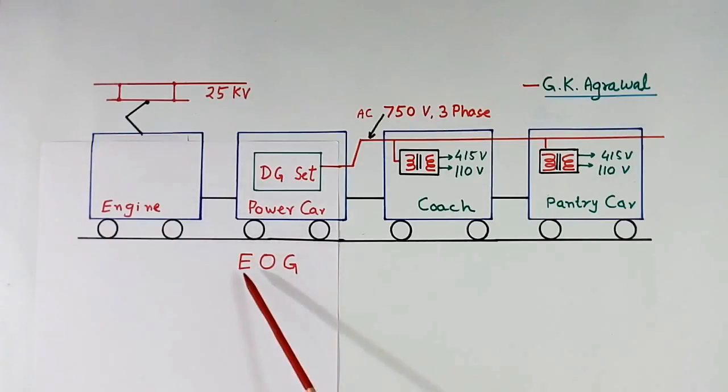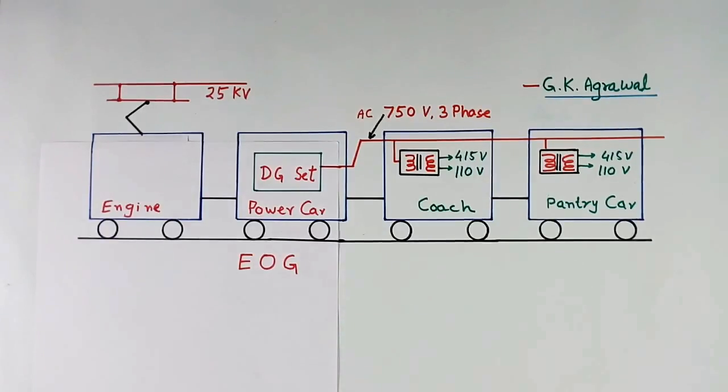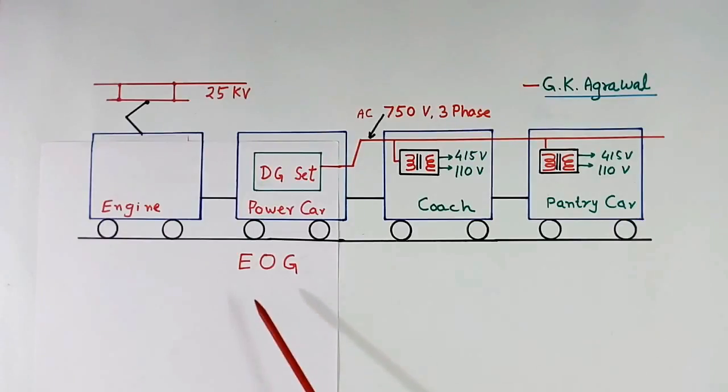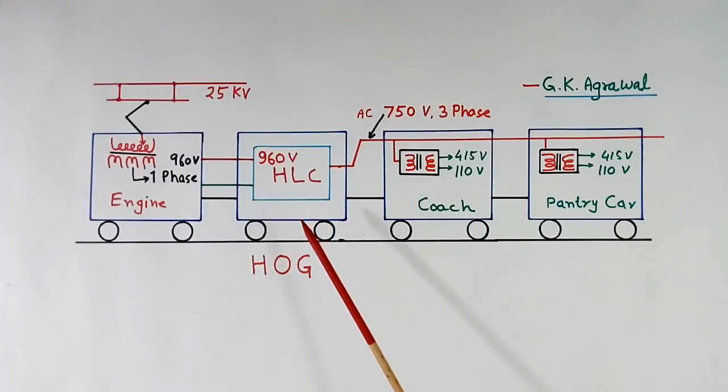Now why it is called EOG, End On Generation? Because power car or DG set is used at both ends of the train. At this end also, other end also. So we call it End On Generation. Now I will explain HOG method. In both methods, EOG and HOG, this remains same. Only here change is taking place. This is HOG method. In HOG method we use HLC, Hotel Load Converter, which converts single phase AC into 3 phase AC.